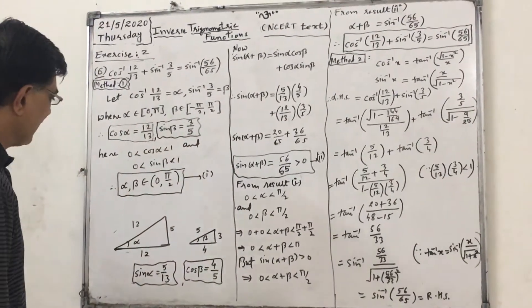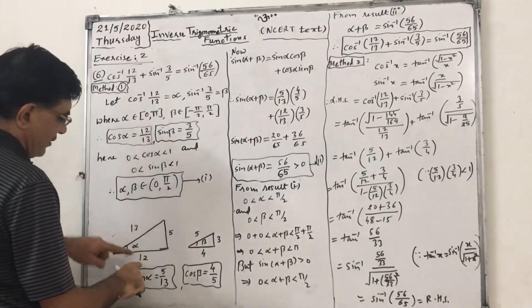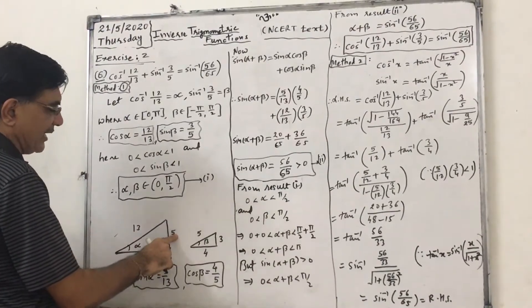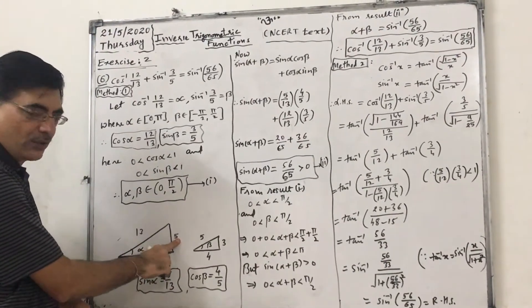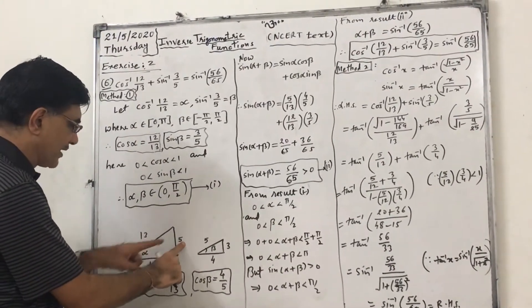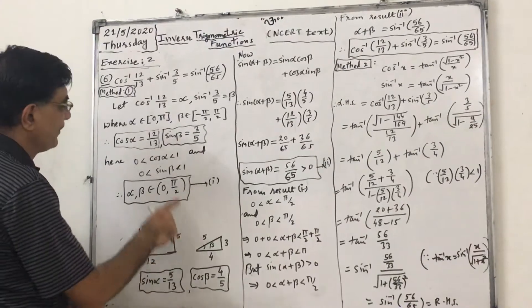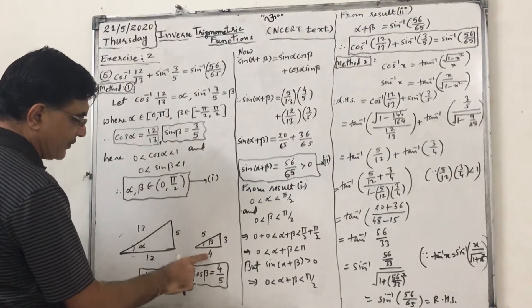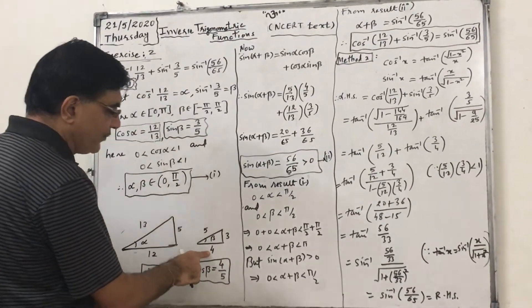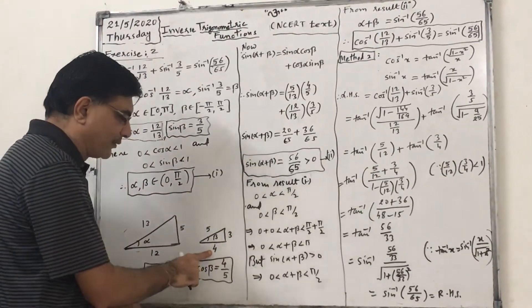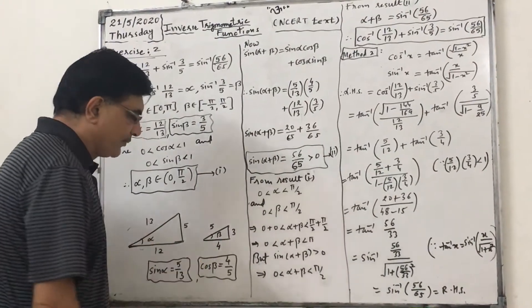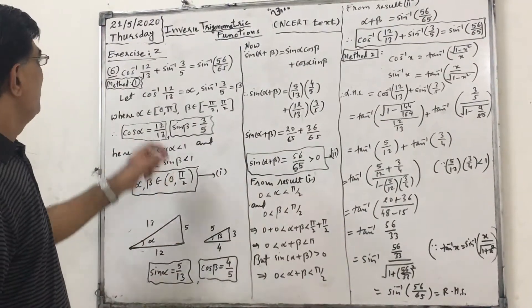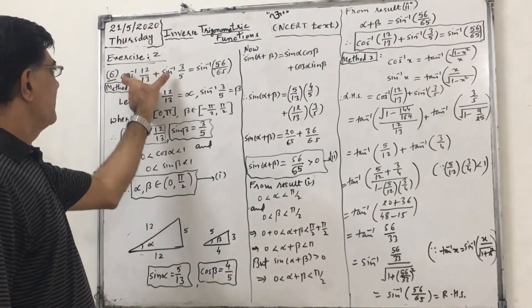Preparing right angle triangles: cos alpha = 12 by 13, so the opposite side will be 5 according to Pythagoras, so sin alpha will be 5 by 13. Sin beta is 3 by 5, so the adjacent side will be 4 according to Pythagoras, so cos beta will be 4 by 5.